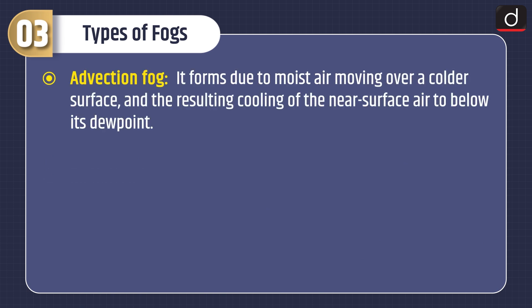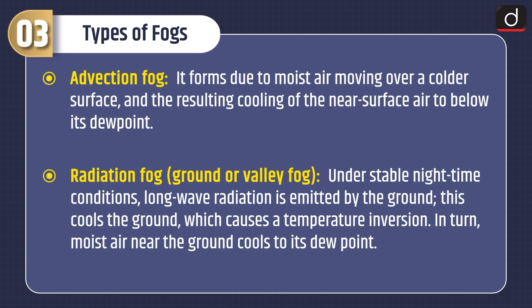Now let's discuss different types of fogs. Advection fog forms due to moist air moving over a colder surface and the resulting cooling of the near-surface air to below its dew point. Radiation fog, i.e. ground or valley fog: under stable night-time conditions, long-wave radiation is emitted by the ground, cooling it and causing a temperature inversion; in turn, moist air near the ground cools to its dew point.